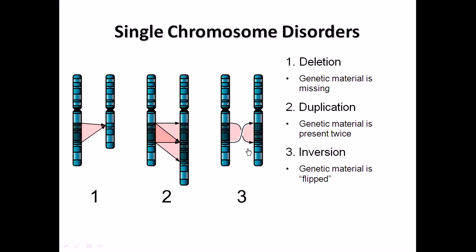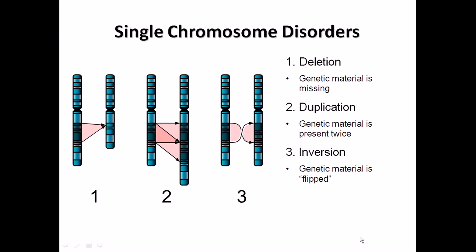Sometimes a segment is clipped out, rotated 180 degrees, and attached back to the same chromosome — this is not involving two different chromosomes, it is all within the same single chromosome, and this is called inversion. So the gene is simply getting flipped. These are three different problems that can be seen with a single chromosome.